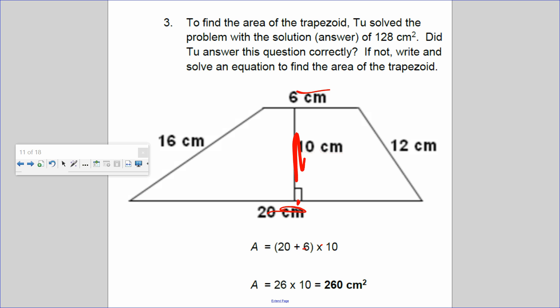Are we missing something here? Oh, he forgot to do half. He forgot to do half of the bases times the height. So half of 26 is 13 times the height of 10. So the area should be 130 square centimeters. He was so close. A lot of kids do that, they forget to do half of it. They're finding the average of the bases.